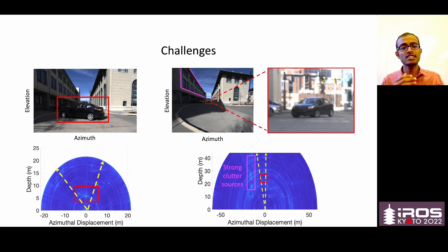So at long ranges, the target's signature is very weak, and the entire signal is dominated by strong clutter sources. This is even more challenging when the clutter is static, such as the building is static, and the object is also static, such as a parked car.